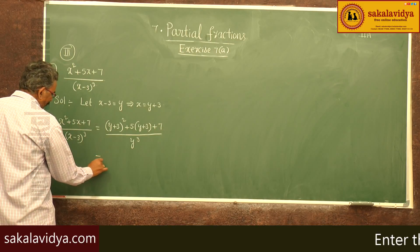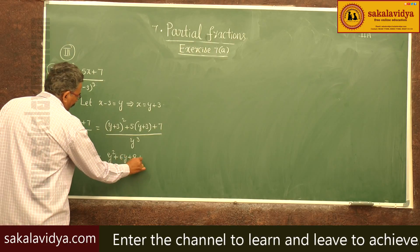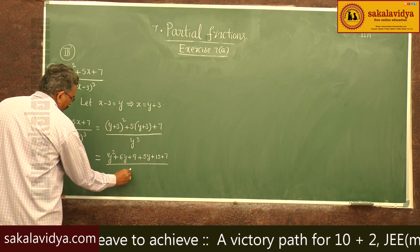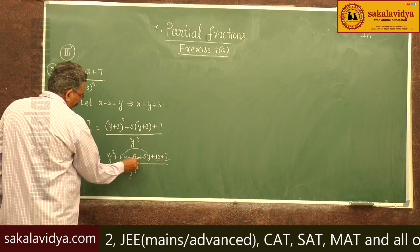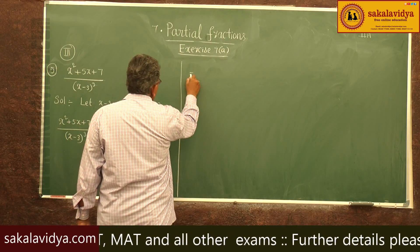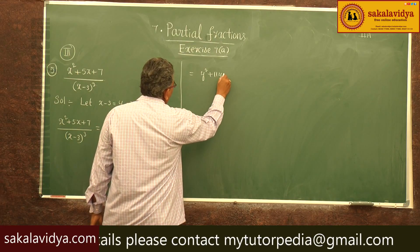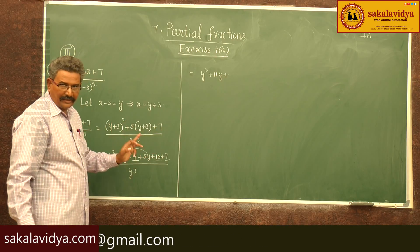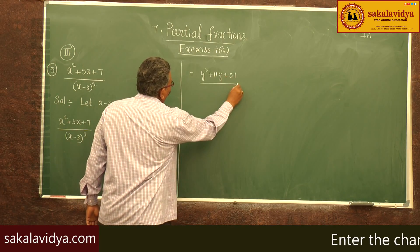Let us simplify: (y plus 3) squared gives y squared plus 6y plus 9, then we add 5y plus 15 plus 7, all over y cubed. Collecting terms: y squared plus 11y, and the constants 9 plus 15 is 24, plus 7 is 31 — so we have y squared plus 11y plus 31, over y cubed.